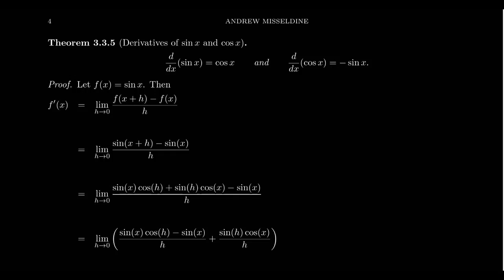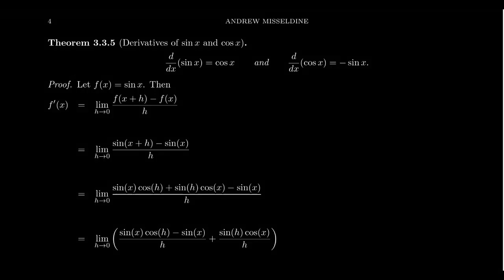In this video, we are going to determine the derivatives of sine and cosine, which turn out to be each other up to a change of sign. We claim that the derivative of sine of x is equal to cosine of x. Similarly, the derivative of cosine of x is equal to negative sine of x.